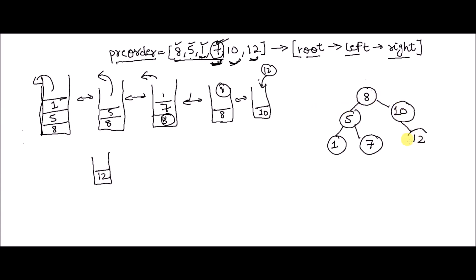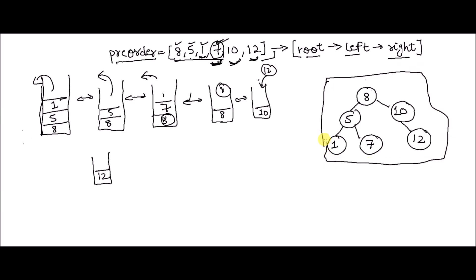In this way I've iterated through the array and you can see that we have our BST. That is the idea of how we are going to do it using a stack. I think it is clear; the remaining part will be clear when we code. Let's jump on to the coding part now.